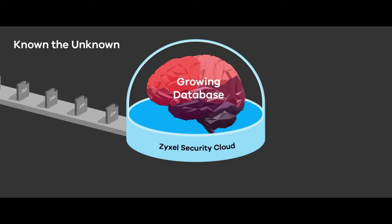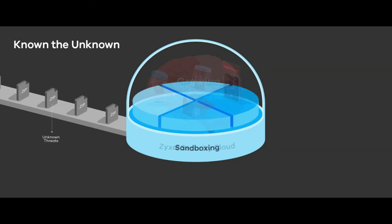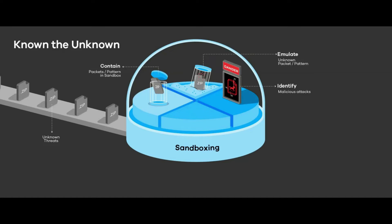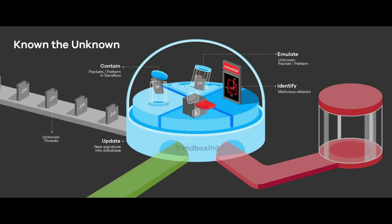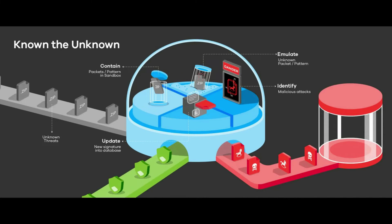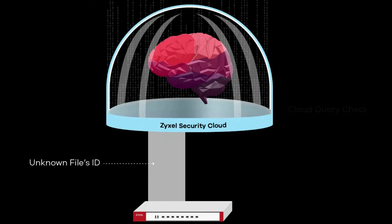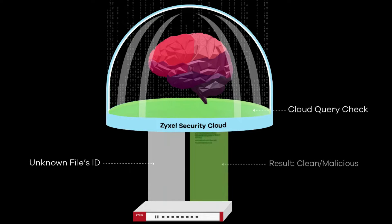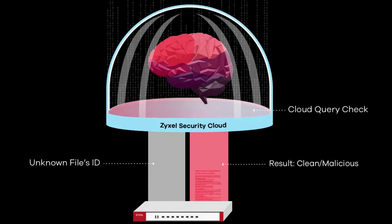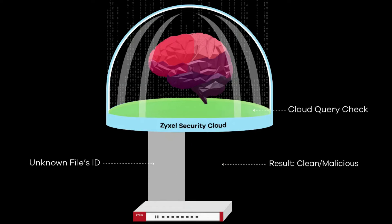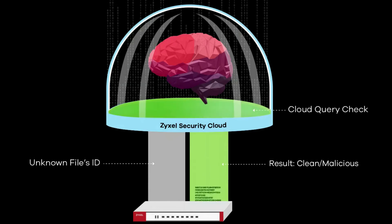If a file contains unrecognized patterns, the USG Flex H series will send it to the sandbox security cloud for analysis, executed within an isolated virtual machine to determine if it poses a threat. Files identified as malicious will be blocked. The inspected result is stored in the Zyxel security cloud, allowing future inspections from other worldwide Zyxel firewalls to also recognize the malicious file.